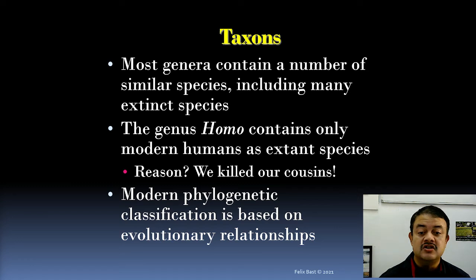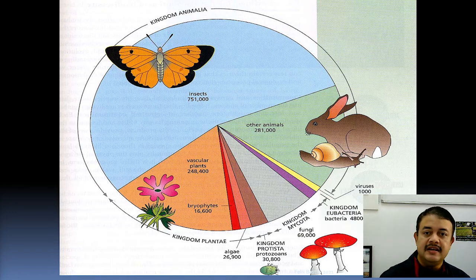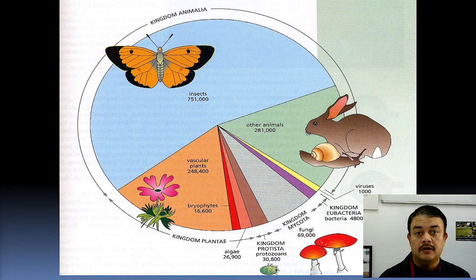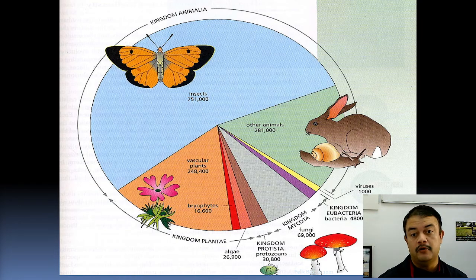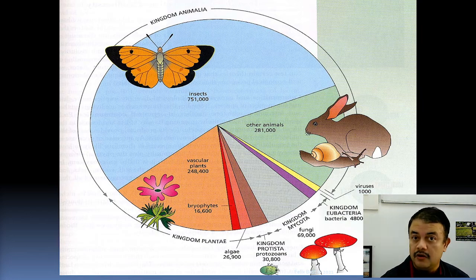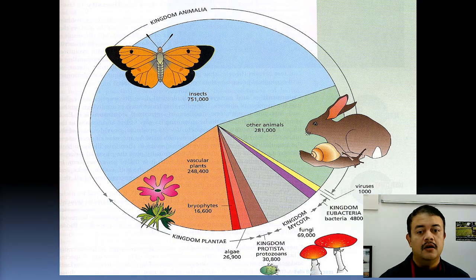Modern phylogenetic classification is based on evolutionary relationships — that is, synapomorphic characters form the basis of phylogenetic systematics. Biodiversity is not evenly distributed across taxa. Insects, for example, have enormous species diversity — 751,000 known species. At the same time, all vascular plants total only around 250,000 species, much fewer than insects. The unequal distribution is partly related to how species are defined, which is why there are several species concepts.